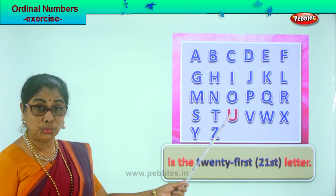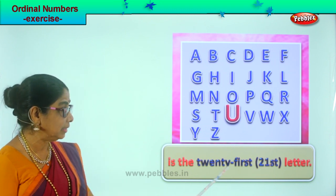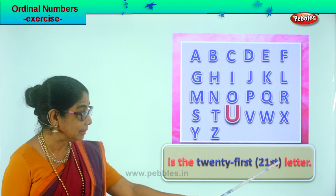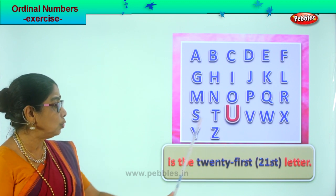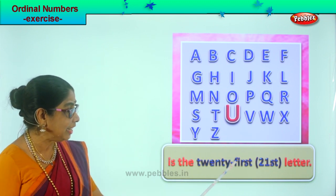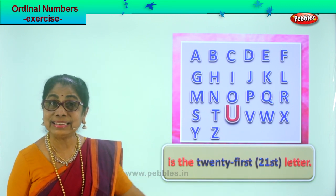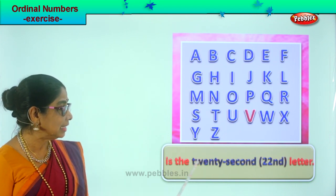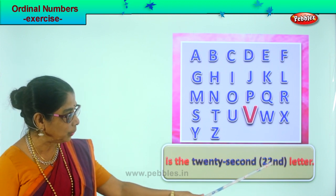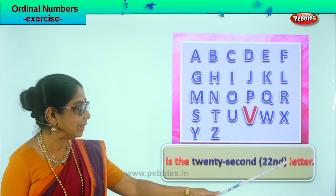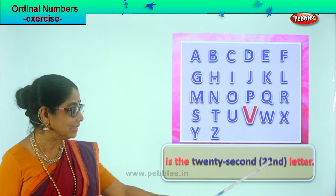After T, U — U is the twenty-first letter. See how you write twenty-first? Write twenty-one and then ST. U is the twenty-first letter. Next, V — V is the twenty-second letter. You write twenty-two and ND. V is the twenty-second letter.